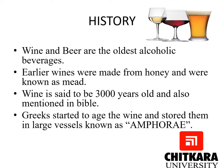When we talk about the history of alcoholic beverages, wine and beer are said to be the oldest alcoholic beverages known to mankind. Earlier, wines were made with honey and were also known as mead. Wine is said to be more than 3,000 years old and is mentioned in the Bible, as well as in Roman and Greek literature. It was the Greeks who started to age the wine, mature it, and store it in large vessels known as amphorae.